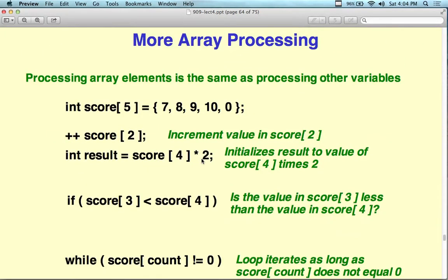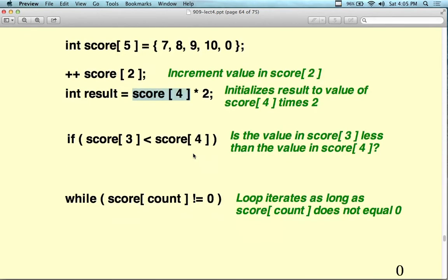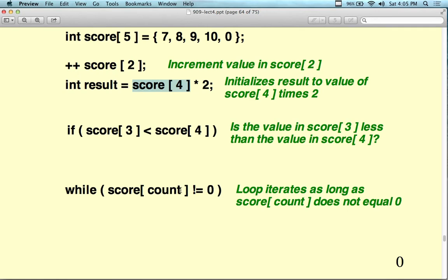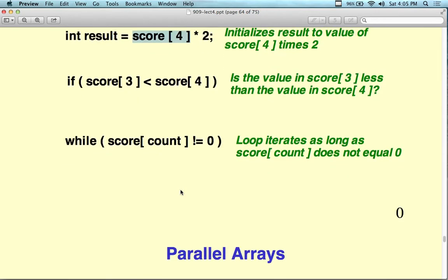Processing arrays is the same as processing other variables. If integer score[5] has five integers, you can go ++score[2] or score[2]++ to increment element two. If integer result = score[4] * 2, you take that index value, resolve it to a number, and multiply. You can do comparisons like if(score[3] < score[4]) and loops like while(score[count] != 0).